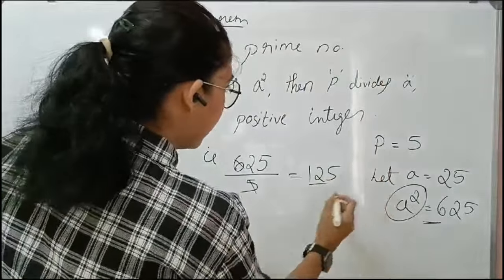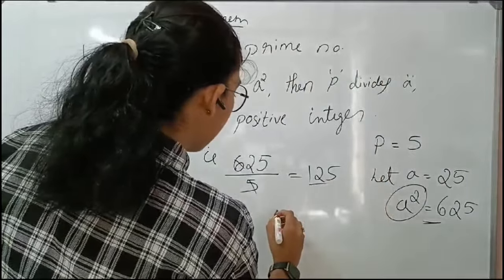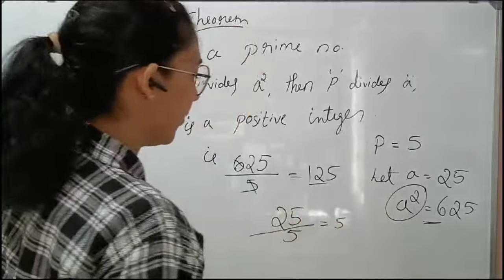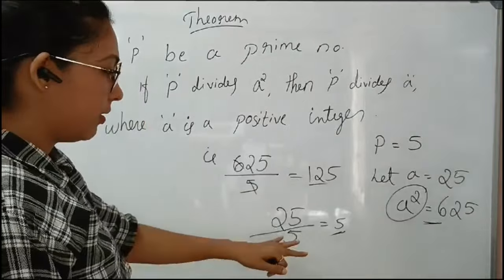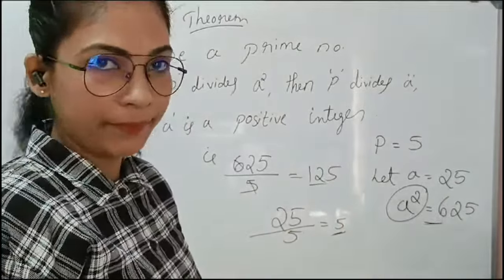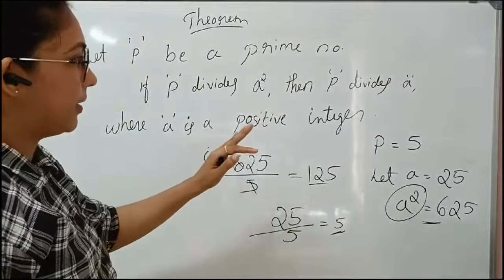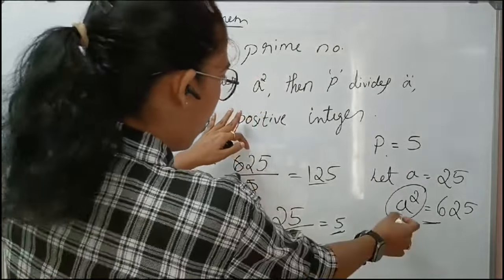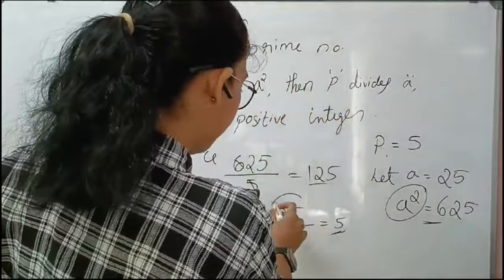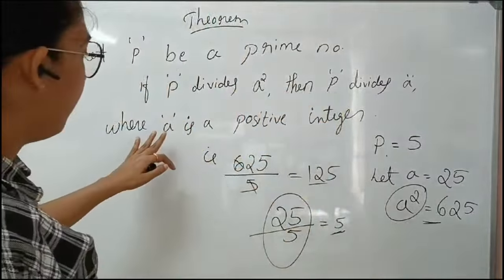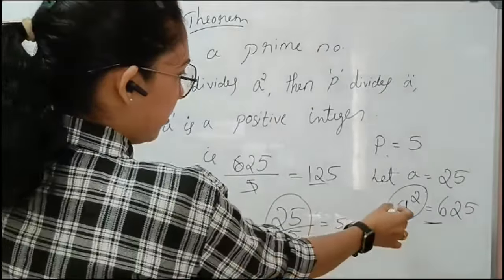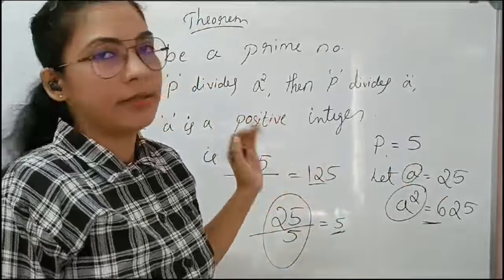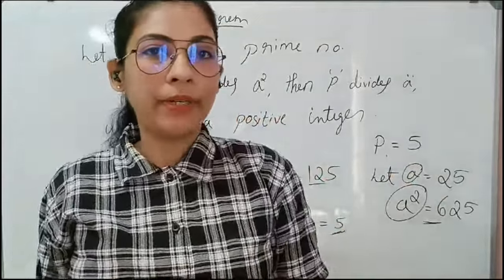Let me check: what is A? A equals 25. And 25 divided by 5 equals 5. This 5 can easily divide 25. So this is the proof: let P be a prime number, if P divides A squared then P divides A, where A is a positive integer. Since A equals 25, it is a positive integer.